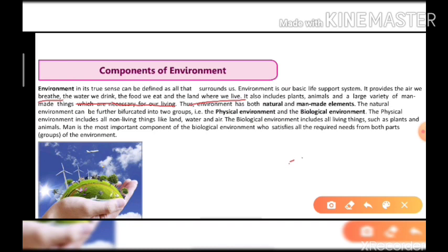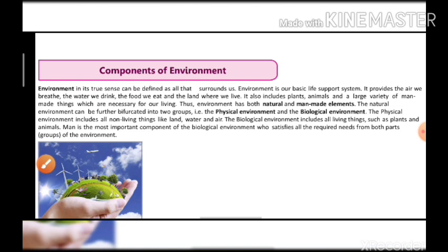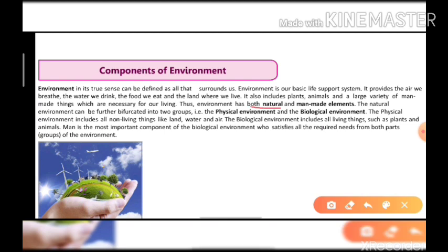Environment also includes plants, animals, and a large variety of man-made things which are necessary for our living. Thus, the environment has both natural and man-made components. Natural and man-made — these are the two components of the environment.